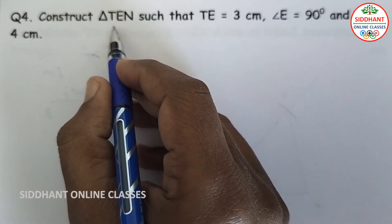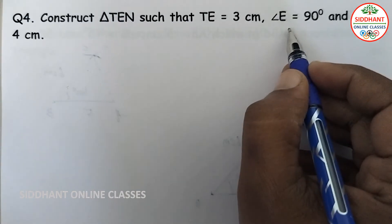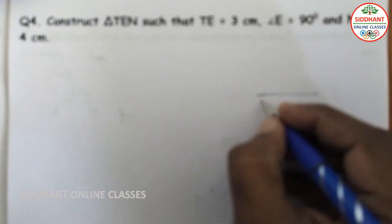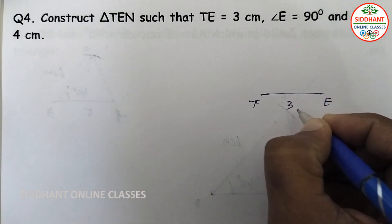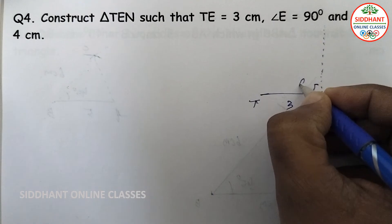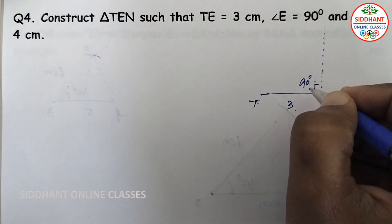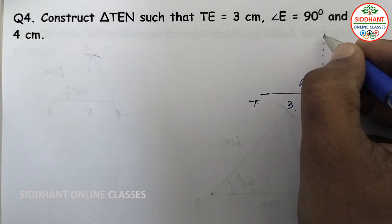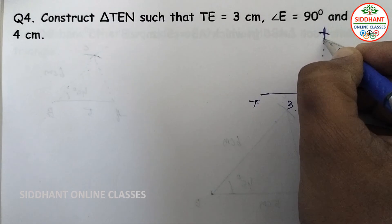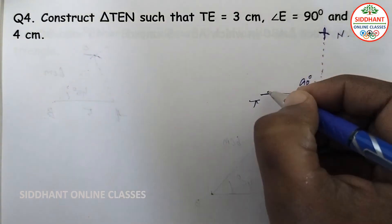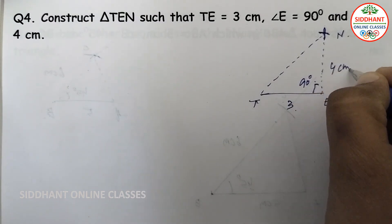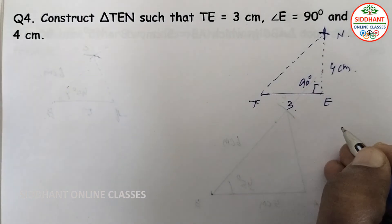Question number four: Construct Triangle TEN such that TE is equal to 3 centimeters, Angle E is 90 degrees, and NE is 4 centimeters. For the rough diagram: TE is 3 centimeters; from E we draw 90 degrees. This is Angle E. We take 4 centimeters with a compass and make an arc to get point N, then join point N and point T to get the triangle.